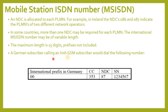A German subscriber calling an Irish GSM subscriber would dial the following number: International Prefix in Germany is 00, Country Code (CC) is 353, National Destination Code (NDC) is 87, and Subscriber Number (SN) is 1234567 as an example.